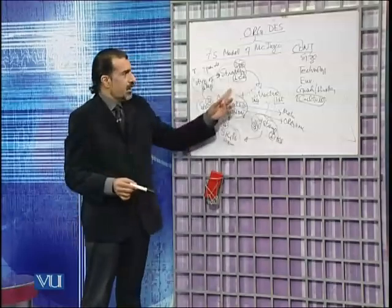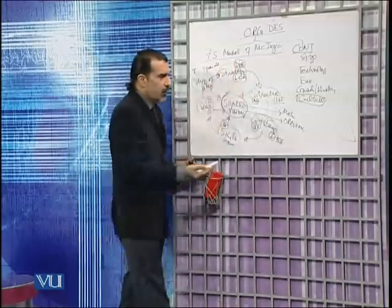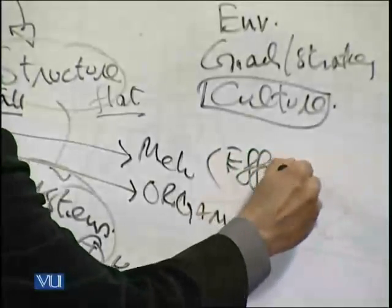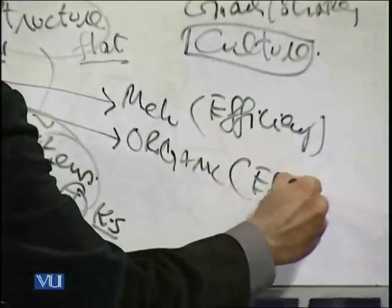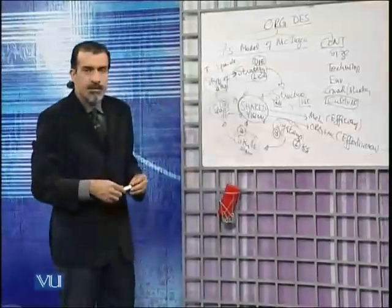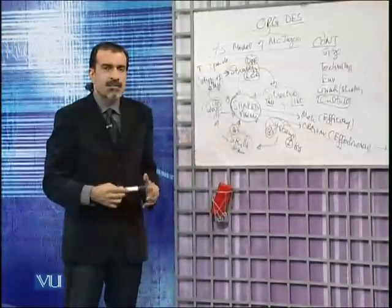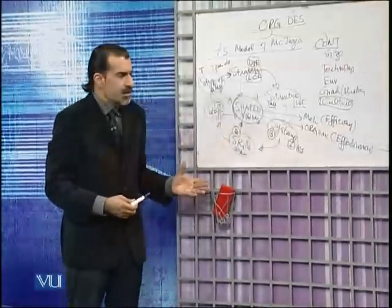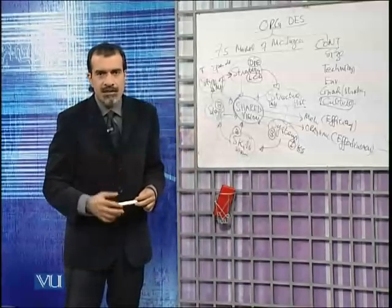These different cultures are found when the strategy is differentiation. So in one case the outcome is efficiency, and in the other the outcome is effectiveness. Mechanistic design is basically an efficiency-oriented design, whereas organic design is an effectiveness-oriented design. These two important outcomes are directly linked to which design type a company adopts.